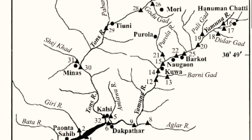The Yamuna River System is the largest tributary of the Ganga. It originates in Uttarakhand and flows through the states of Delhi, Uttar Pradesh, Himachal Pradesh, Haryana, and Rajasthan.